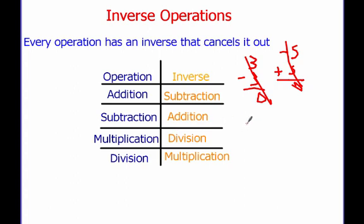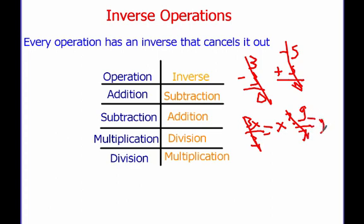Similarly, multiplication and division. If I have 3 times x and I divide by 3, they cancel out and just give me x. Or if I have g over 7, and I multiply that by 7, these cancel out and I just get g. So inverse operations just cancel each other out. We're going to be using these to solve our equations.